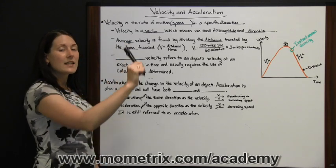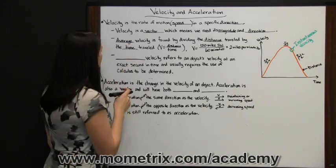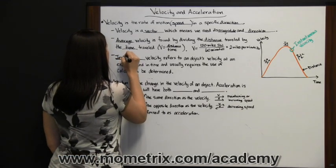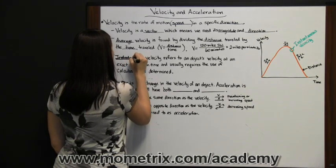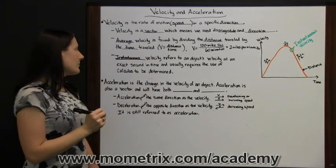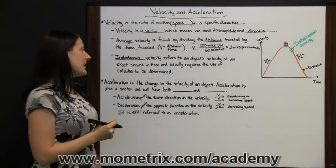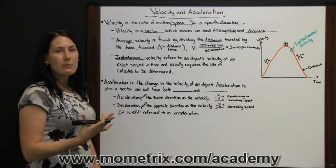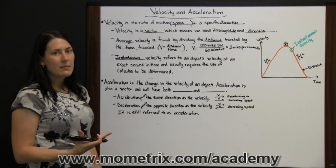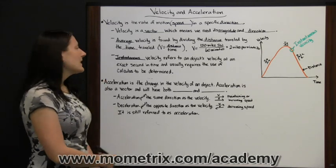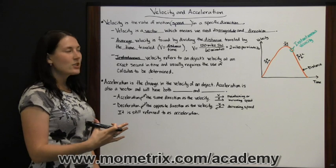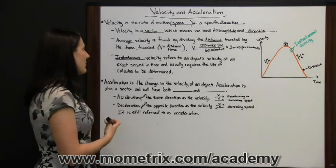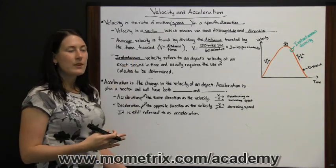Your velocity is constantly increasing and decreasing as you're traveling. The other type of velocity to look for is instantaneous velocity. This refers to an object's velocity at an exact second in time, and usually requires the use of calculus to be determined. But if you hit a pothole, it would be good to know if you were going 1 mile an hour or 60 miles an hour. Knowing at that exact second in time how fast you were going and what direction — that would be important. Most commonly, average velocity is what you hear about.